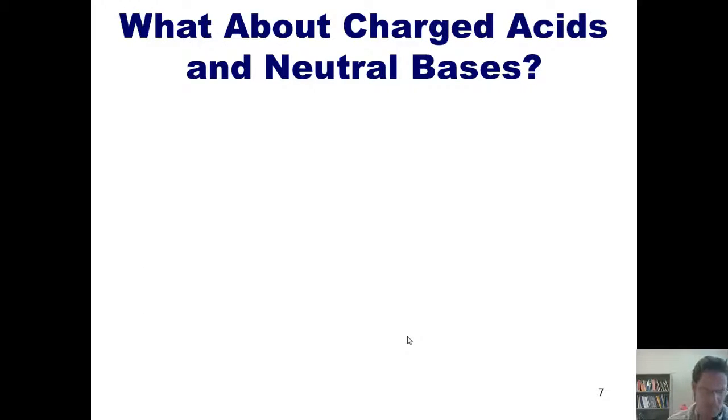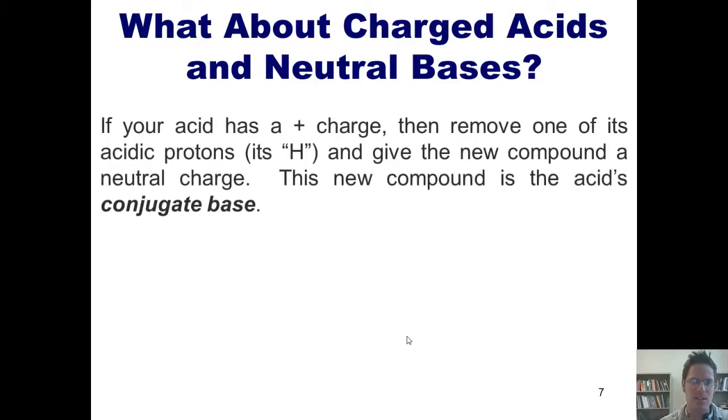Now, thus far, I've told you that if you replace an acid's acidic proton with a minus charge, you make an acid's conjugate base. But what if you start out with an acid that has a positive charge from the very beginning? Does its conjugate base still end up with a negative charge? Well, if your acid already has a positive charge,